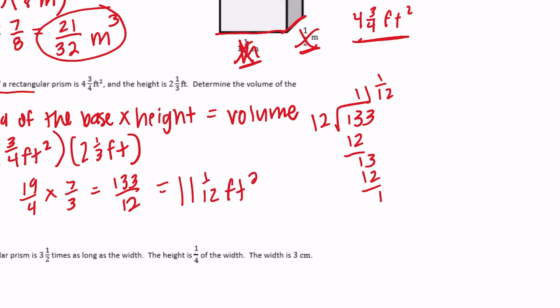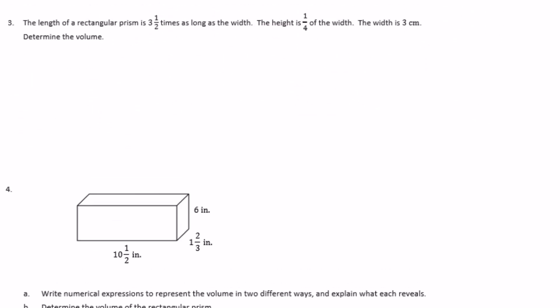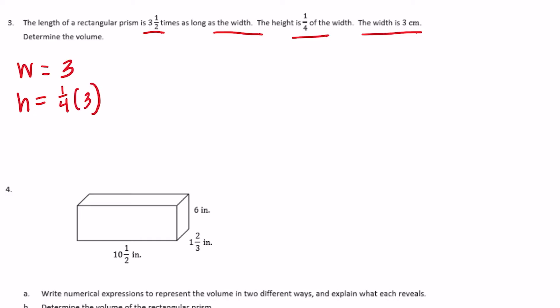Number 3: the length of a rectangular prism is three and a half times as long as its width. The height is one-fourth of the width. The width is three centimeters. So the width equals three. The height is one-fourth of the width, so height is one-fourth times three. The length is three and a half times the width, which is three.